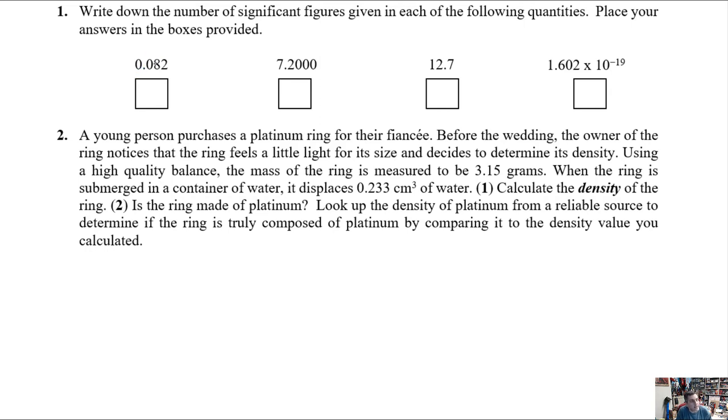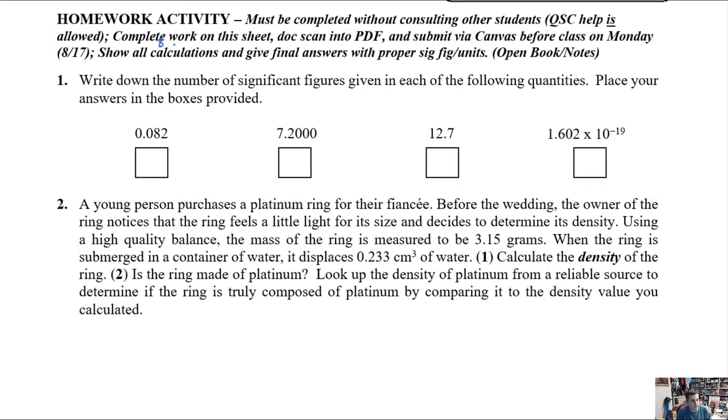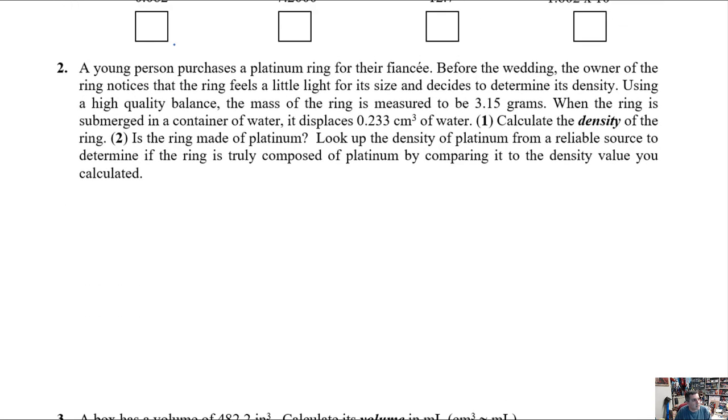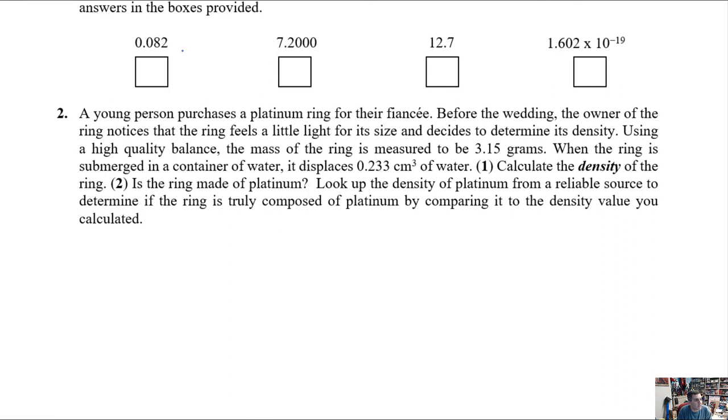The other thing you can do here is if you write this number in scientific notation, right? If we're going to write this in scientific notation, it'd be 8.2 times 10 to the negative 2. Now, I know the problem didn't ask you to do this, but sometimes writing it in scientific notation can be really helpful, helping you to figure out how many sig figs are available. In this case, there are two.